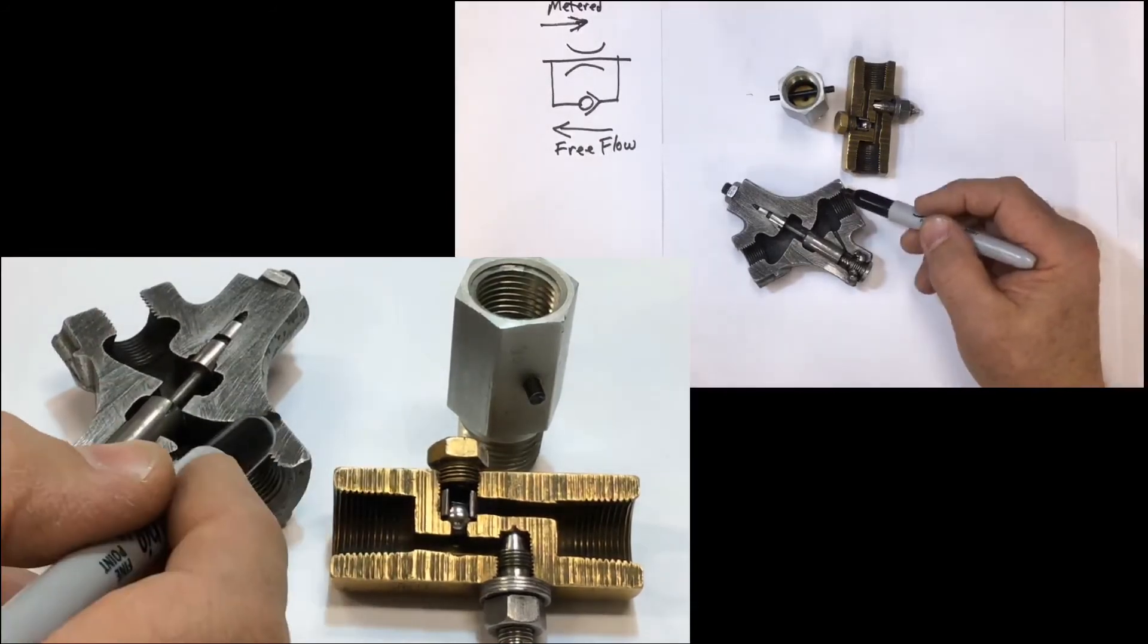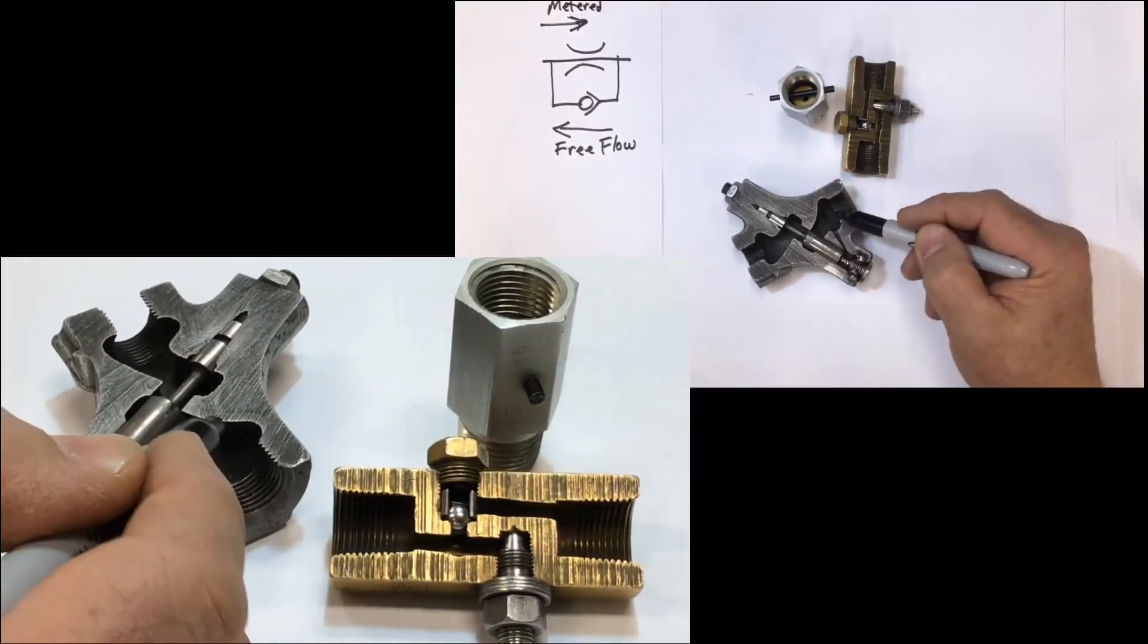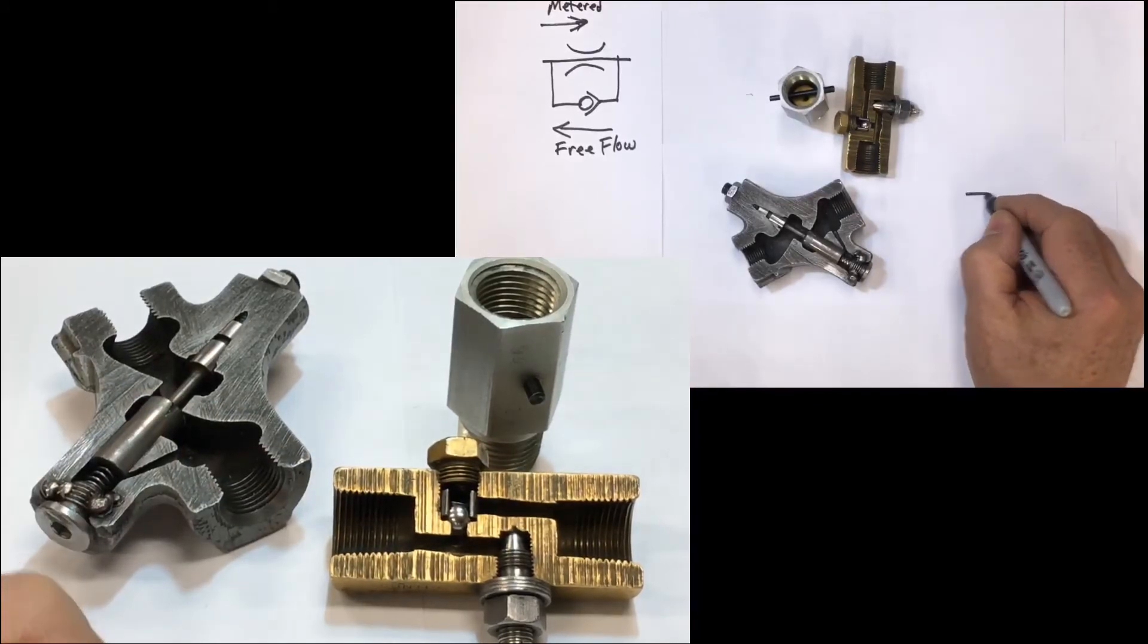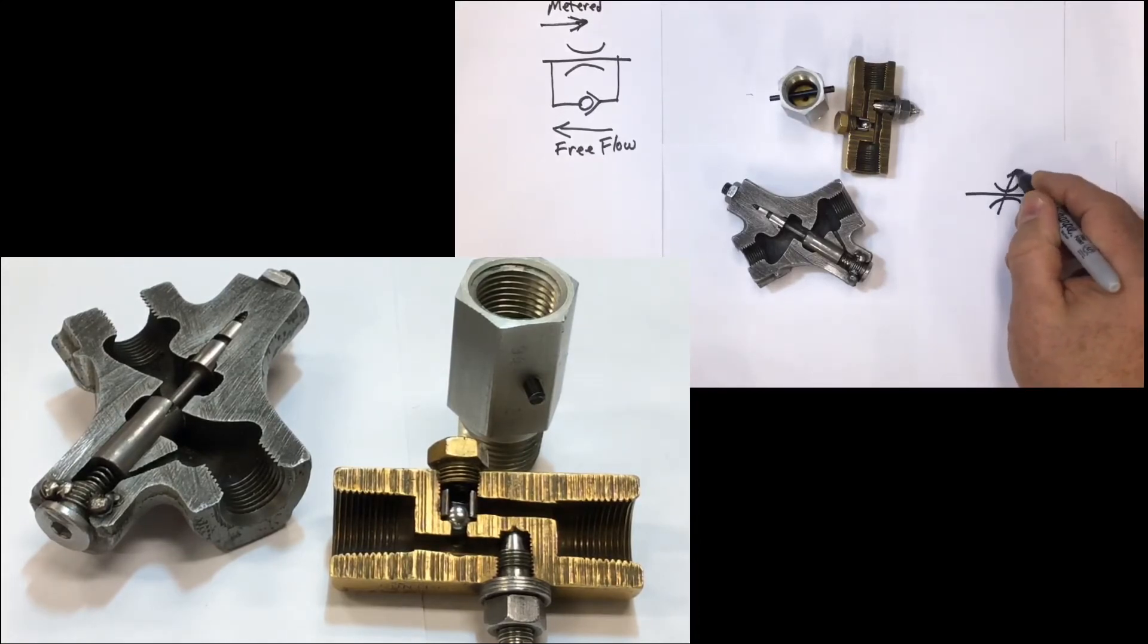In the other two, the two variable orifices, restrictor type, schematically drawn, the only difference between the fixed and the variable is putting an arrow through the variable, the orifice, to indicate that the orifice size can change.